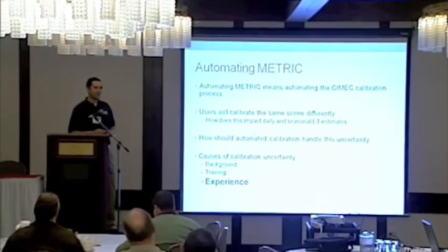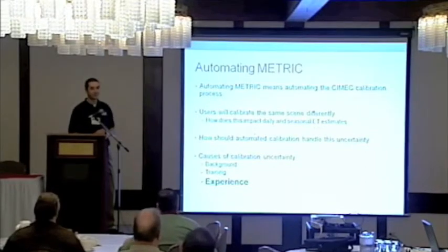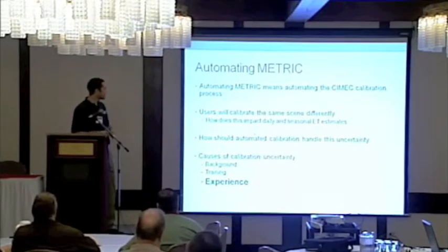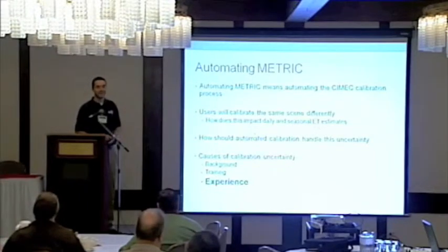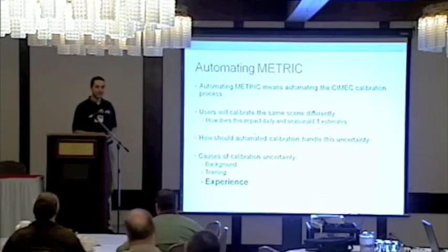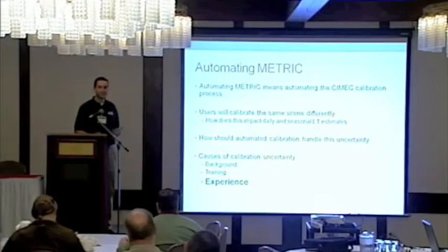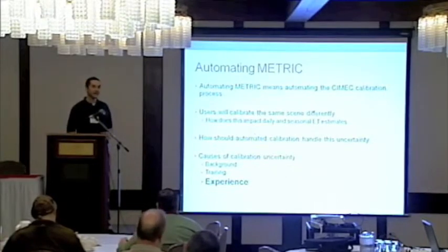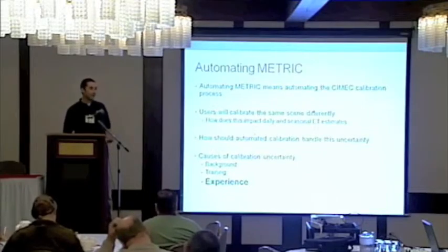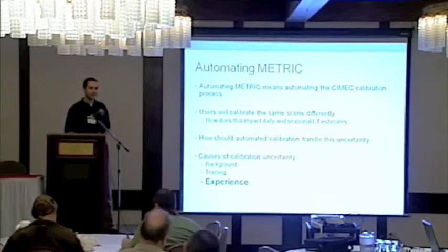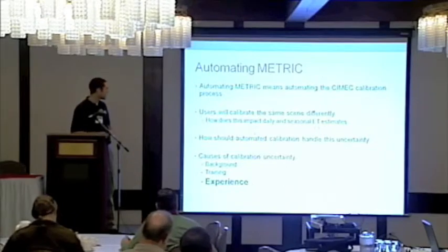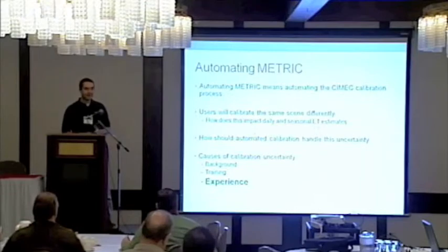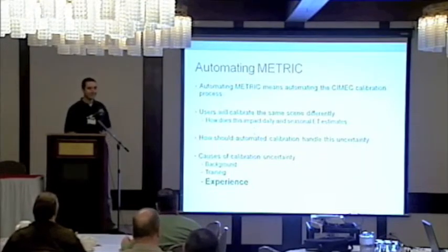How do we automate METRIC? It really means automating the SEBAL/METRIC calibration process — that's picking the hot and cold pixels. The issue with the process is that users will calibrate scenes differently, and there is uncertainty because of who calibrates a scene. There isn't a perfect calibration. You have to consider that — what's the impact? How does this affect our daily and seasonal ET estimates? How should an automated routine handle this uncertainty? If people produce different results, how do we have a computer mimic that kind of user difference?